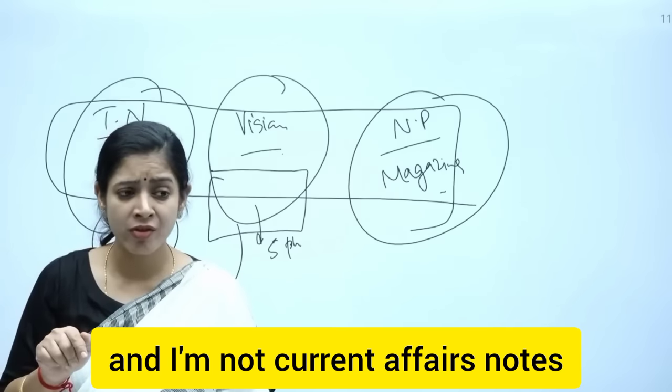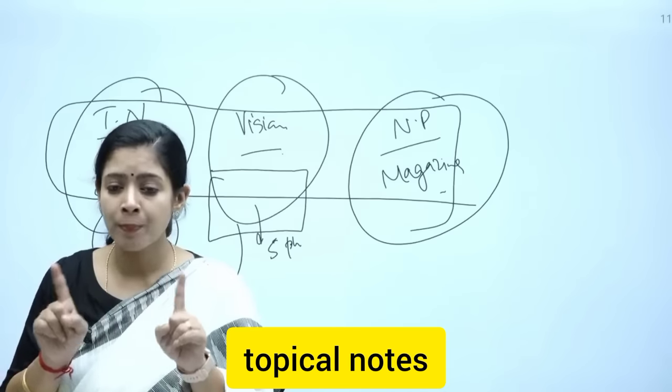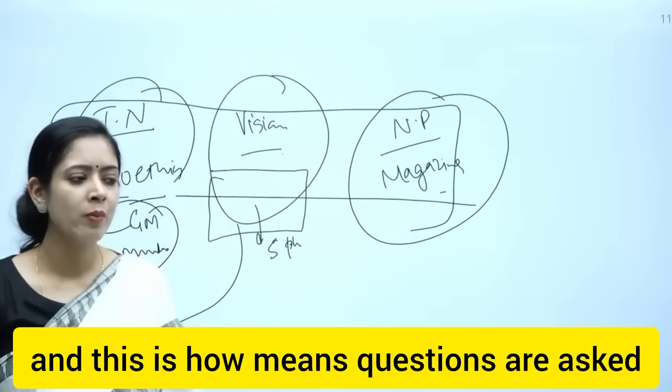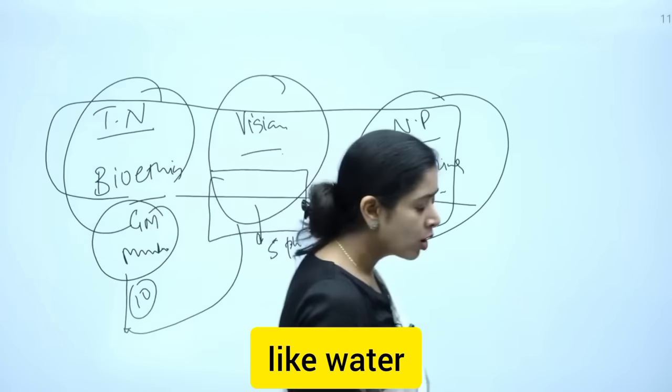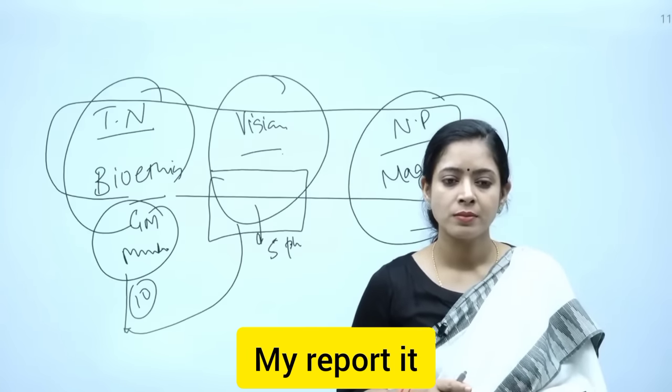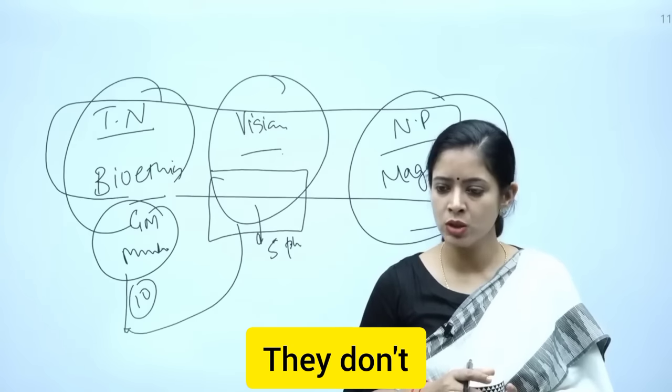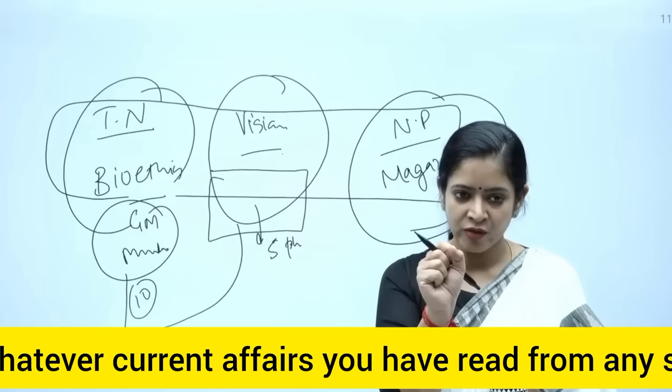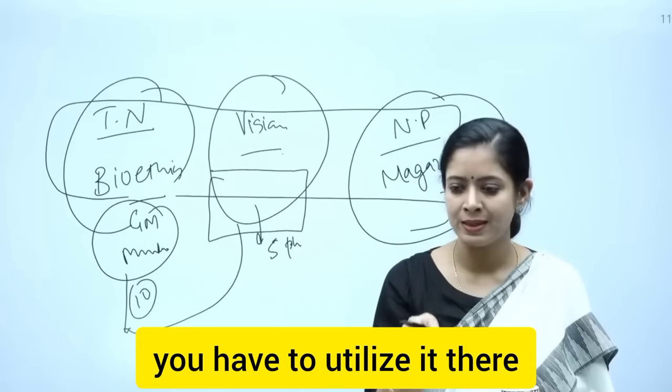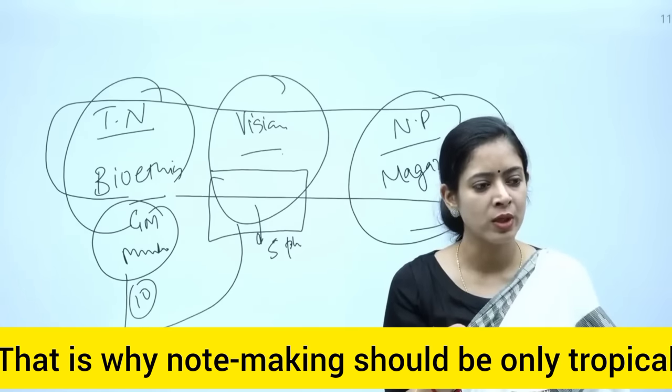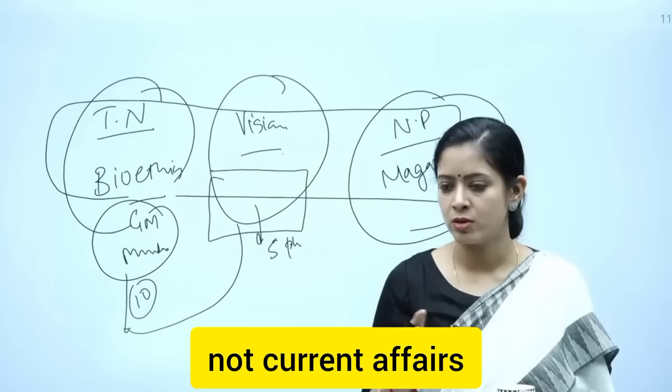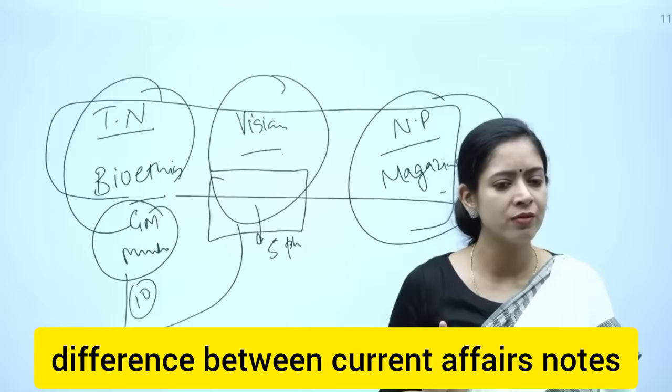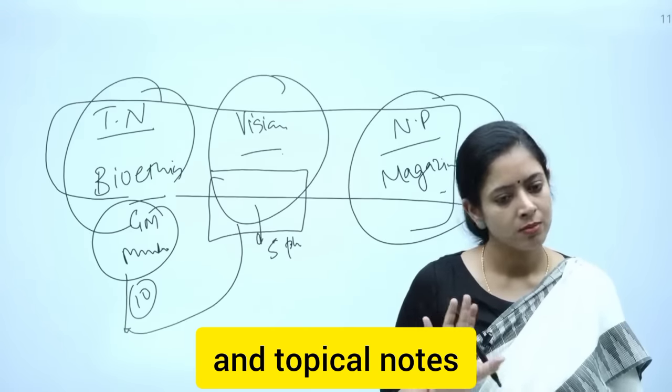Not current affairs notes—those are topical notes. What are topical notes? According to one topic. This is how mains questions are asked. They don't ask you from a general topic. They ask you from a general topic, and whatever current affairs you have read from any source, you have to utilize it there. That is why note-making should be only topical, not current affairs notes. Can you understand the difference between the two? Anybody who's not able to understand the difference between current affairs notes and topical notes? Everybody understands it, because news will come daily.